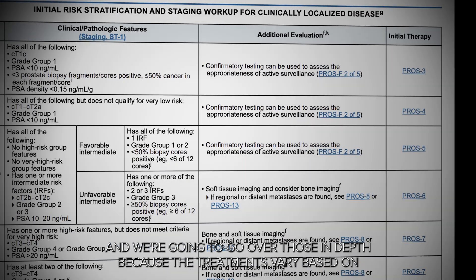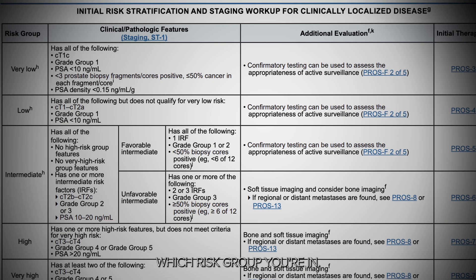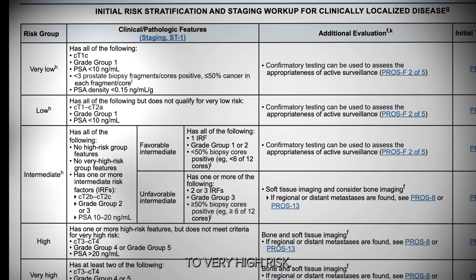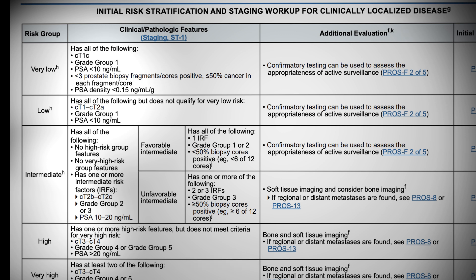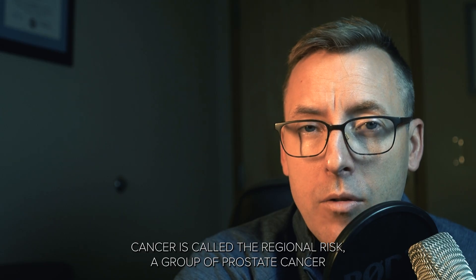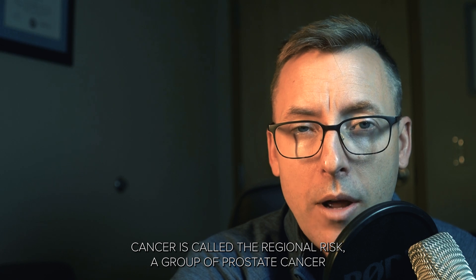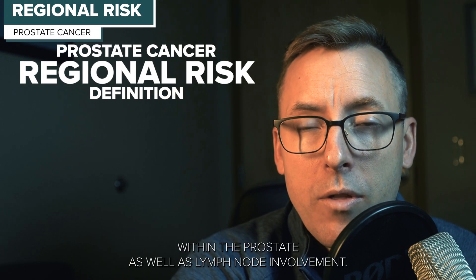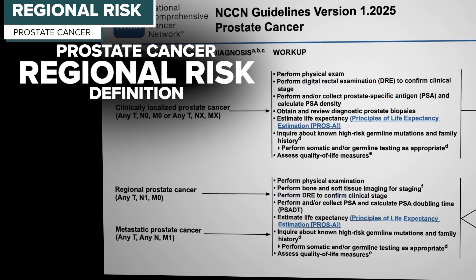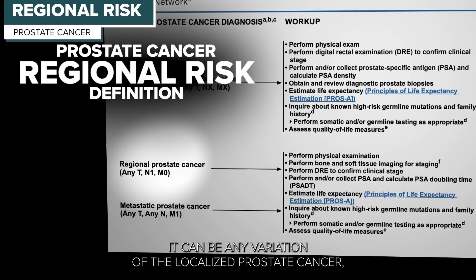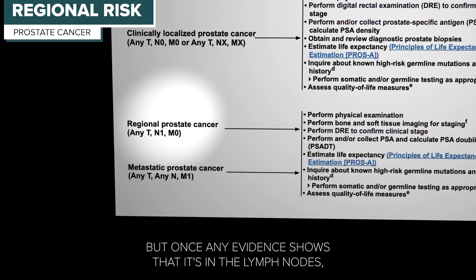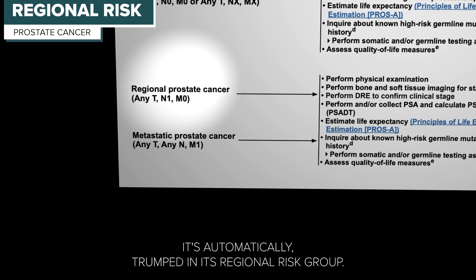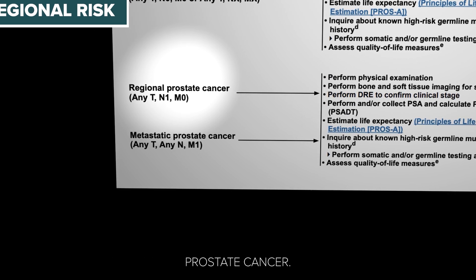The treatments vary based on which risk group you're in, ranging from very low risk to very high risk. The regional risk group means you have cancer within the prostate as well as lymph node involvement. It can be any variation of localized prostate cancer, but once any evidence shows it's in the lymph nodes, it's automatically classified as regional risk group prostate cancer.